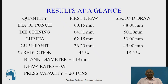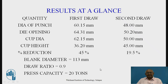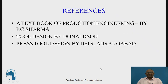Now we will discuss the results at a glance. For the first draw and second draw respectively: punch diameter is 60.15 mm and 48 mm; die opening is 62.31 mm and 50.20 mm; cup diameter is 62.15 mm and 50 mm; cup height is 36.20 mm and 45.45 mm; percentage reduction is 45% and 19%; blank diameter is 113 mm; draw ratio is 0.9; press capacity is 20 kN. For further reading, I recommend the textbook of Production Engineering by P.C. Sharma, Tool Design by Donaldson, and Press Tool Design by Indo-German Tool Room Aurangabad. Thank you.